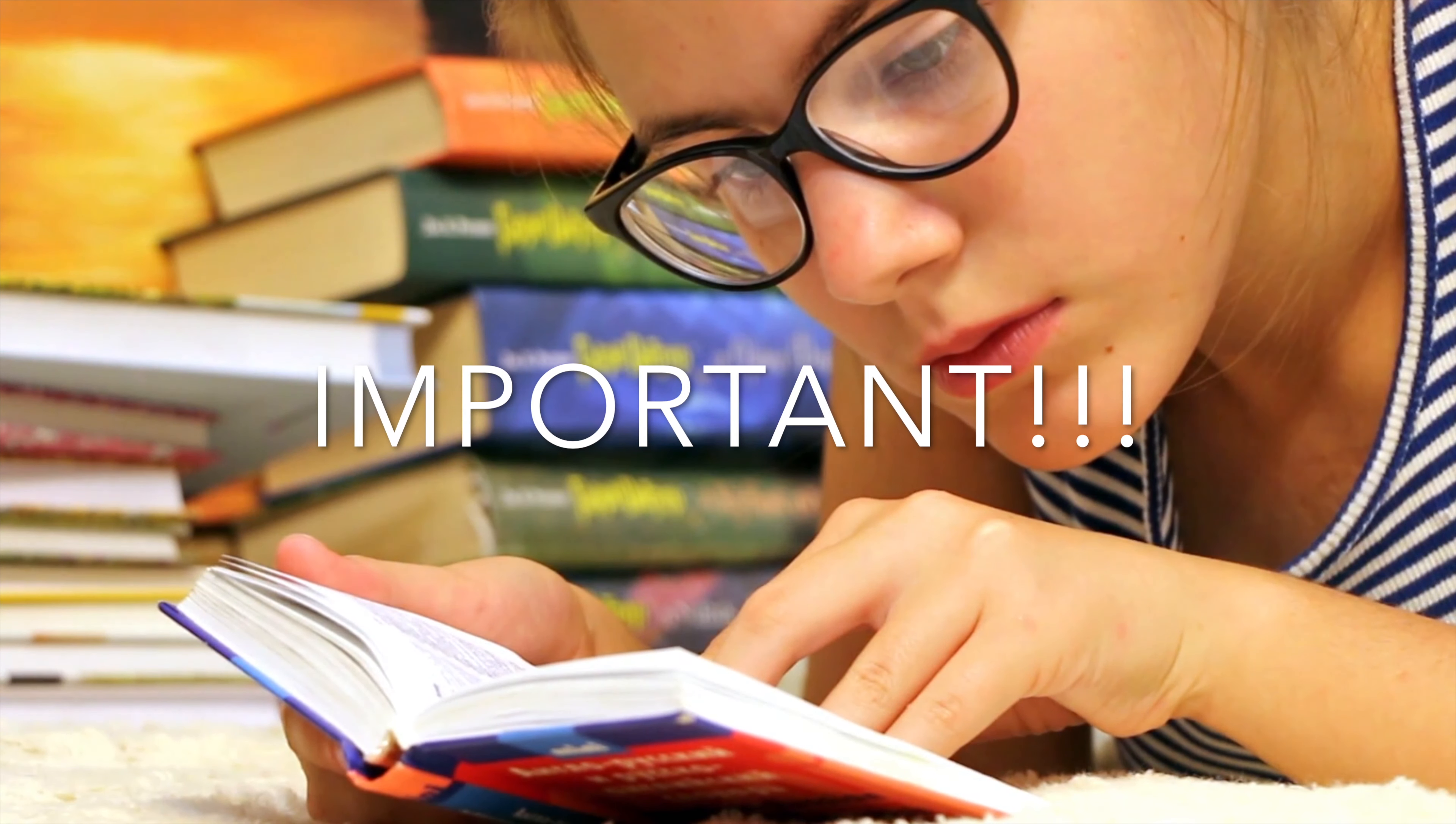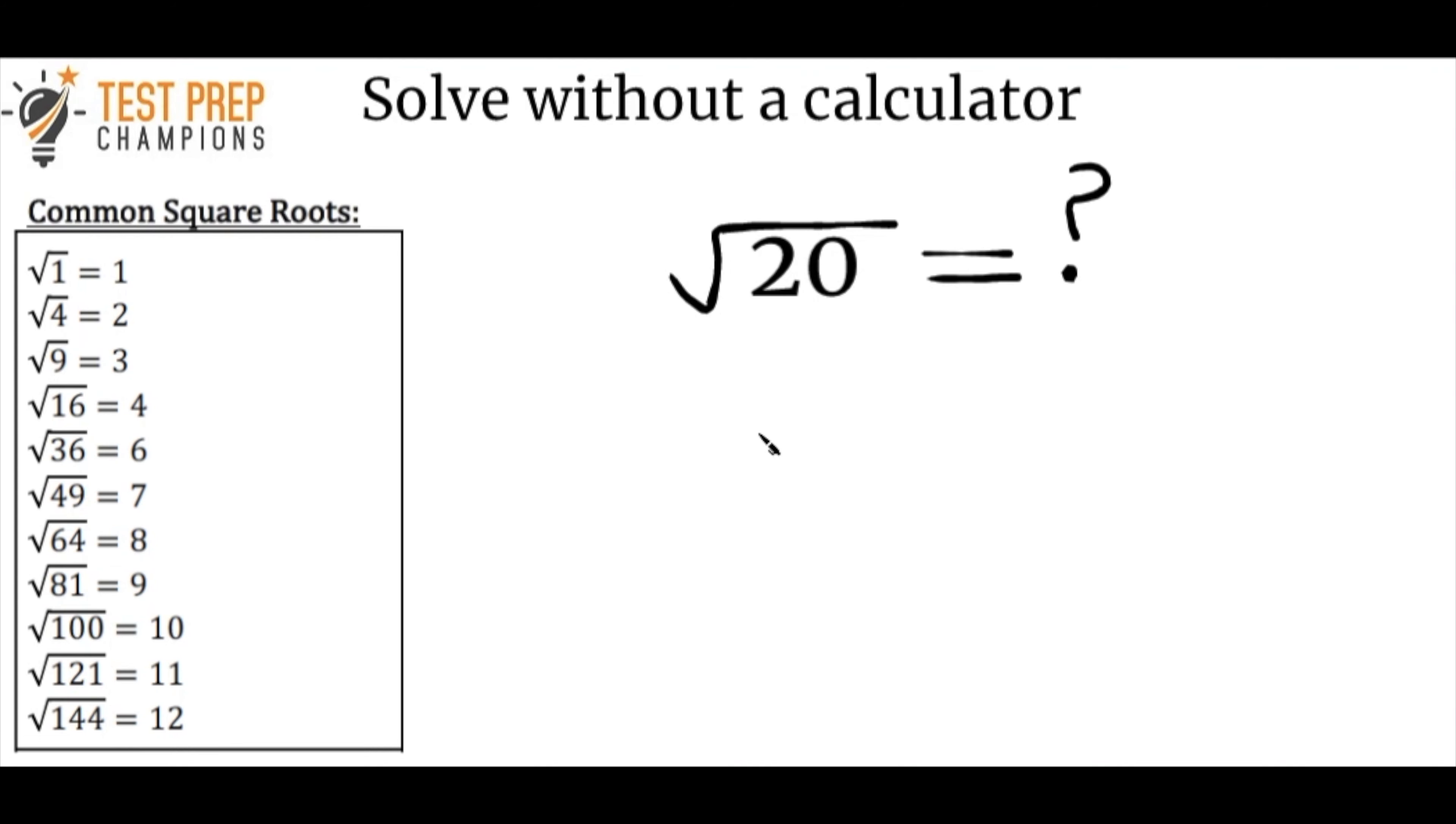Just a heads up, these next two examples are really, really, really important to understand. So what if on your test you get an example like this? The square root of 20 equals blank. And you have to solve it without a calculator. Well how in the world are you supposed to do this? Well it's actually not that hard if we break it down here.